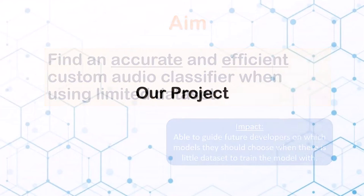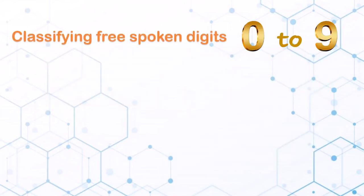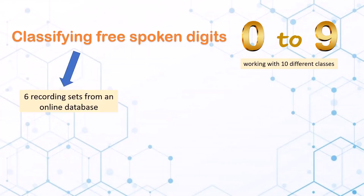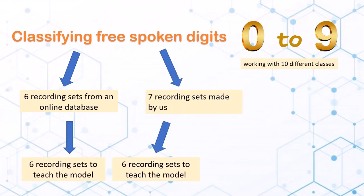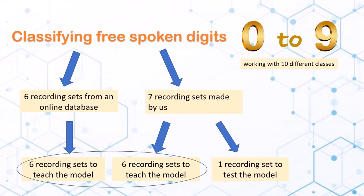For our project, we are classifying 3 spoken digits as there are only 10 different classes to classify. We downloaded 6 sets of recordings from GitHub and an online database, and we made 7 sets of recordings. 6 sets of our recordings will be combined with the online dataset to be used for training our models, while the last set of recordings will be used to evaluate our models.